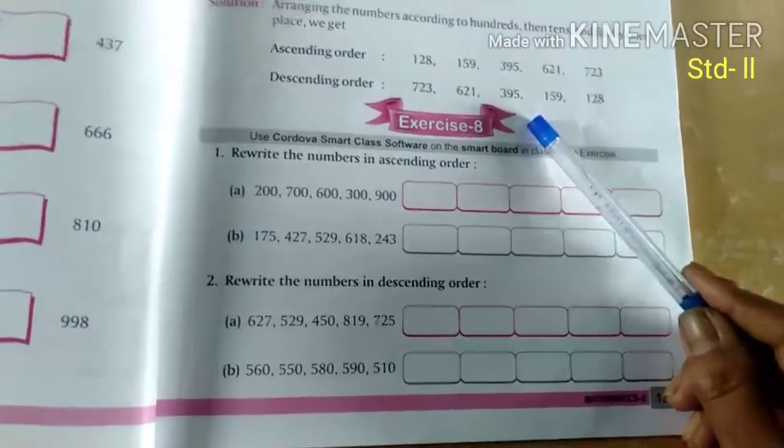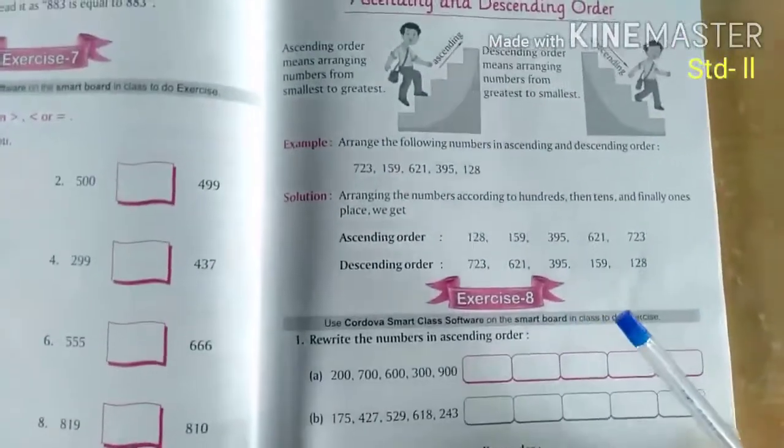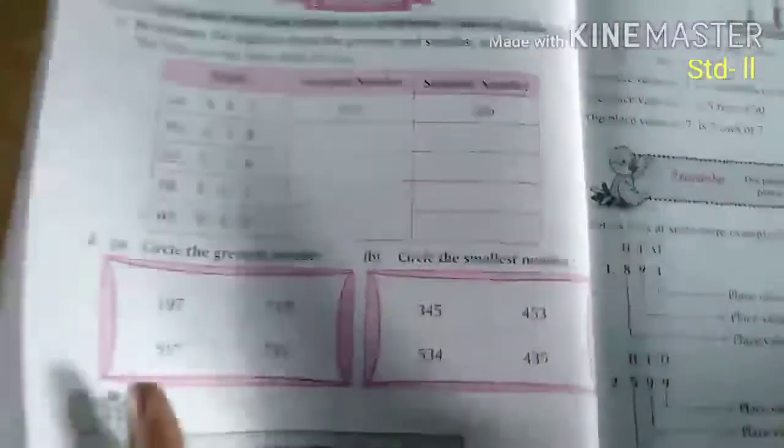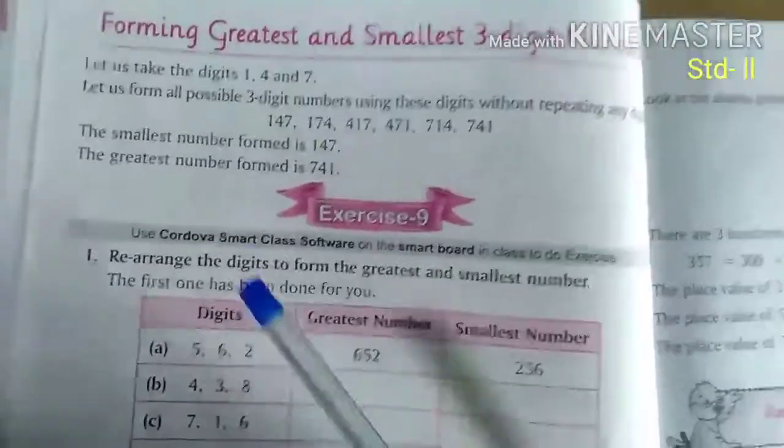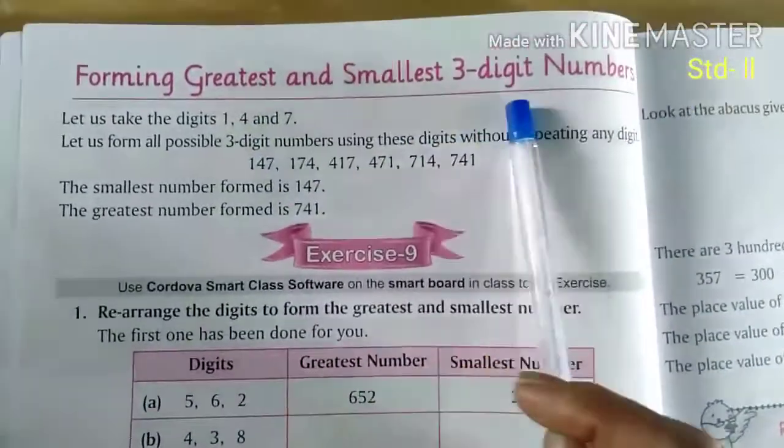Students, you will solve this exercise number 8. Now we will continue the next one. That is forming greatest and smallest